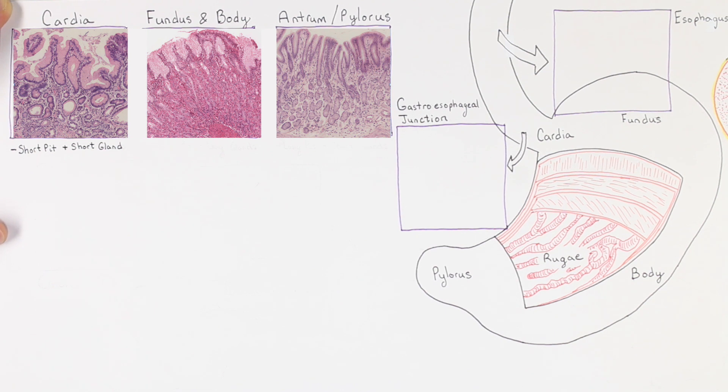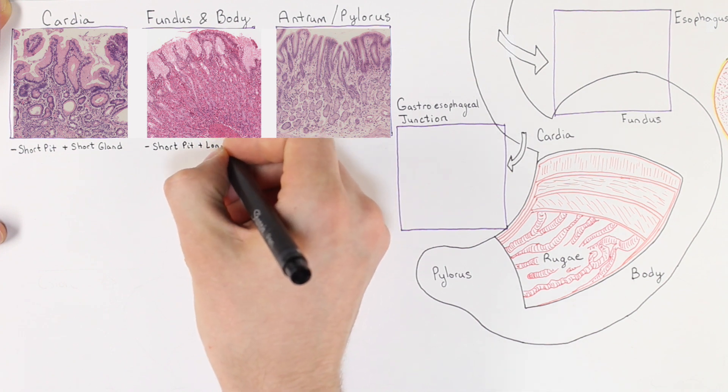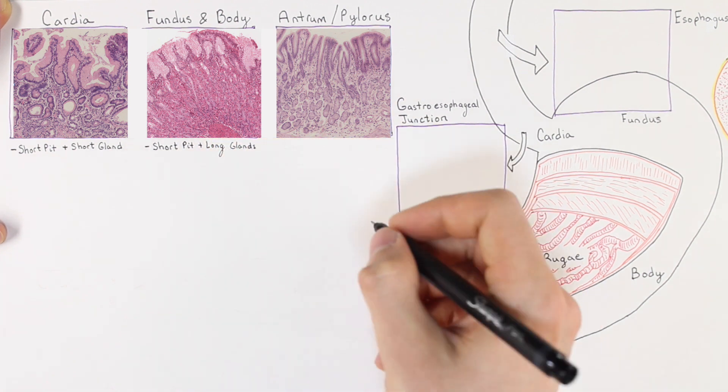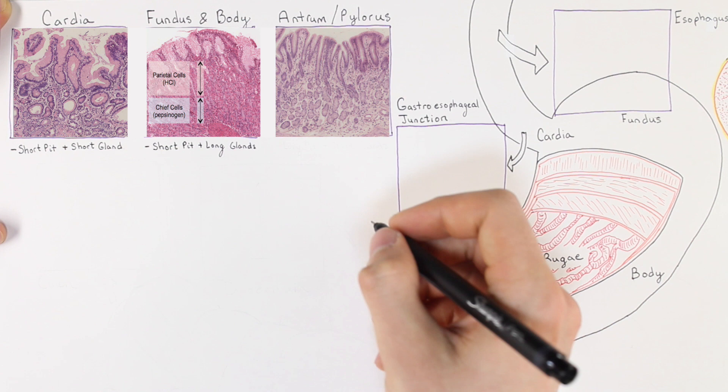The fundus in the body are similar to the cardia in that they have short pits, however they have long glands as shown in the middle slide. This large glandular region is the location of parietal and chief cells. Parietal cells are responsible for maintaining the acidic environment by secreting hydrochloric acid and are bright pink on H&E stain.